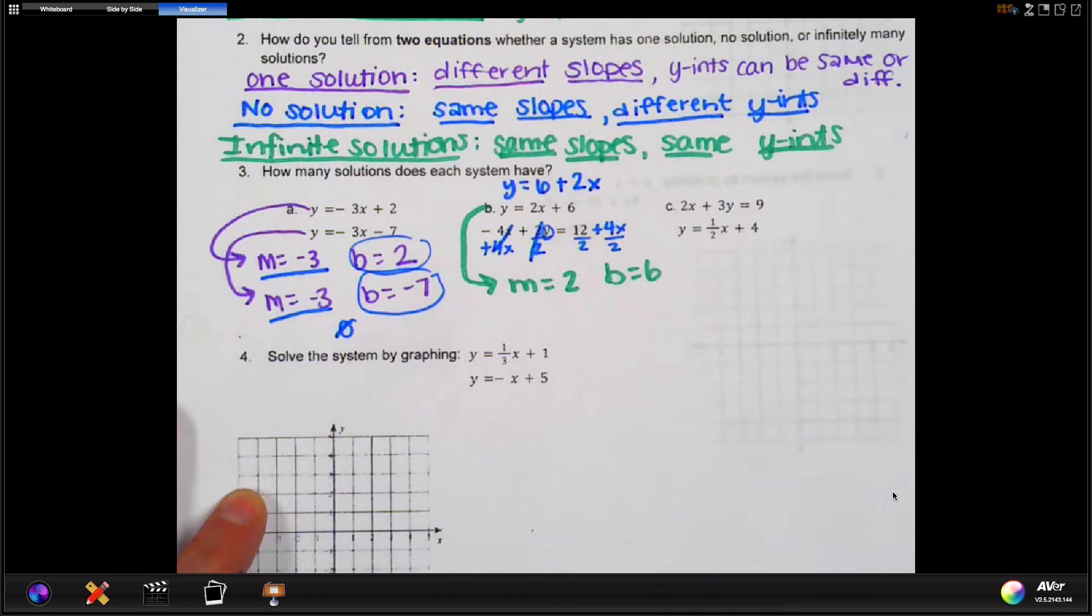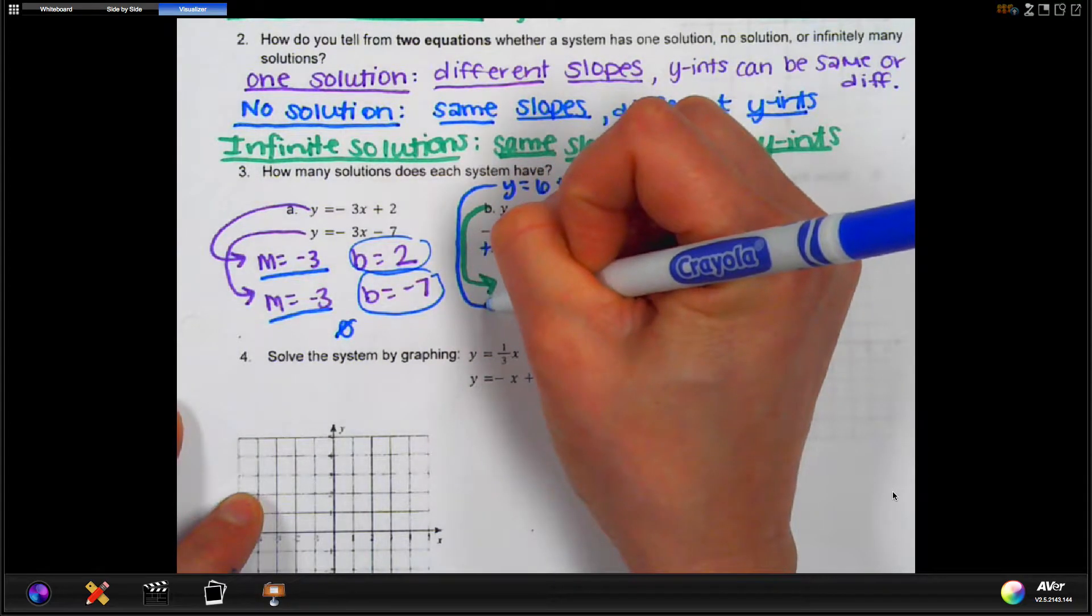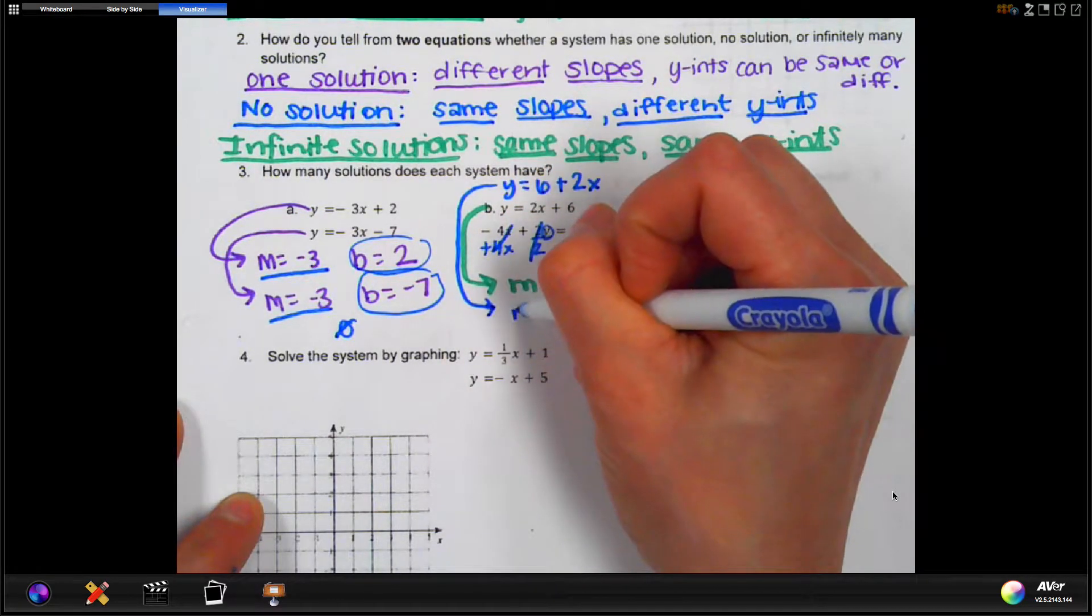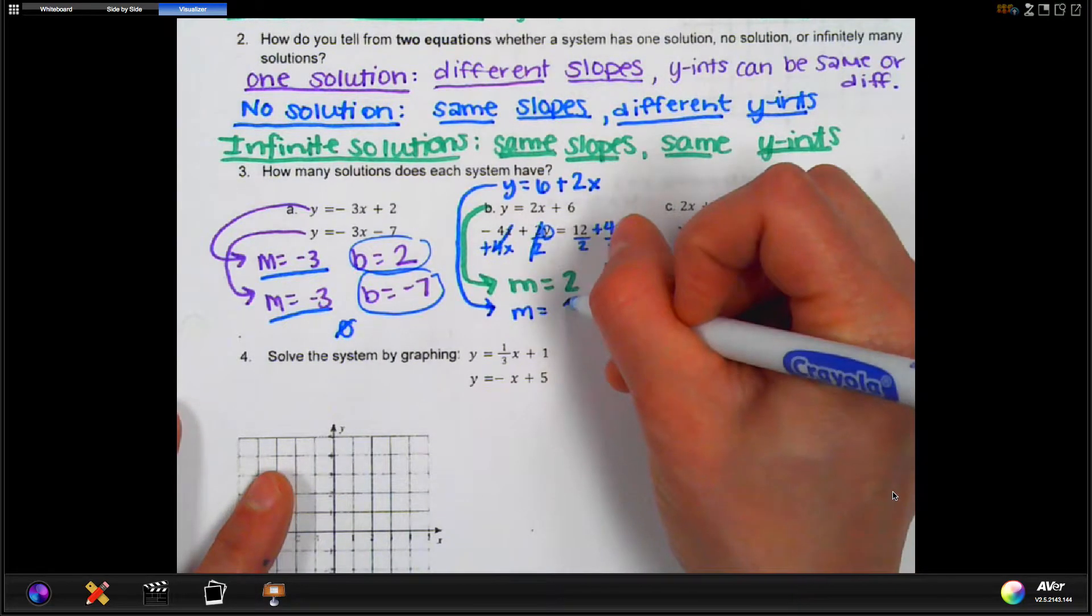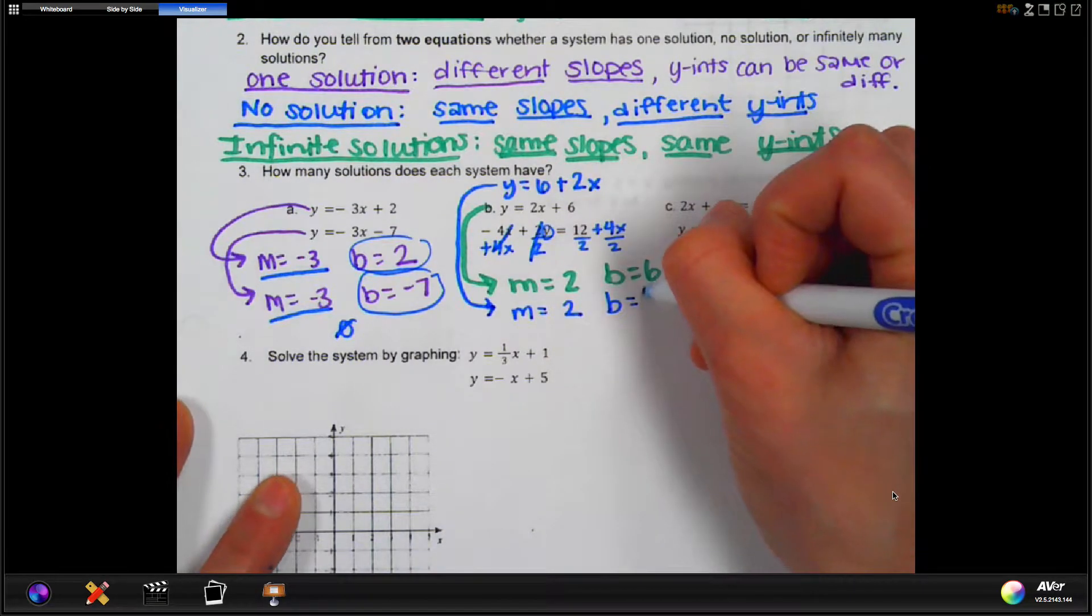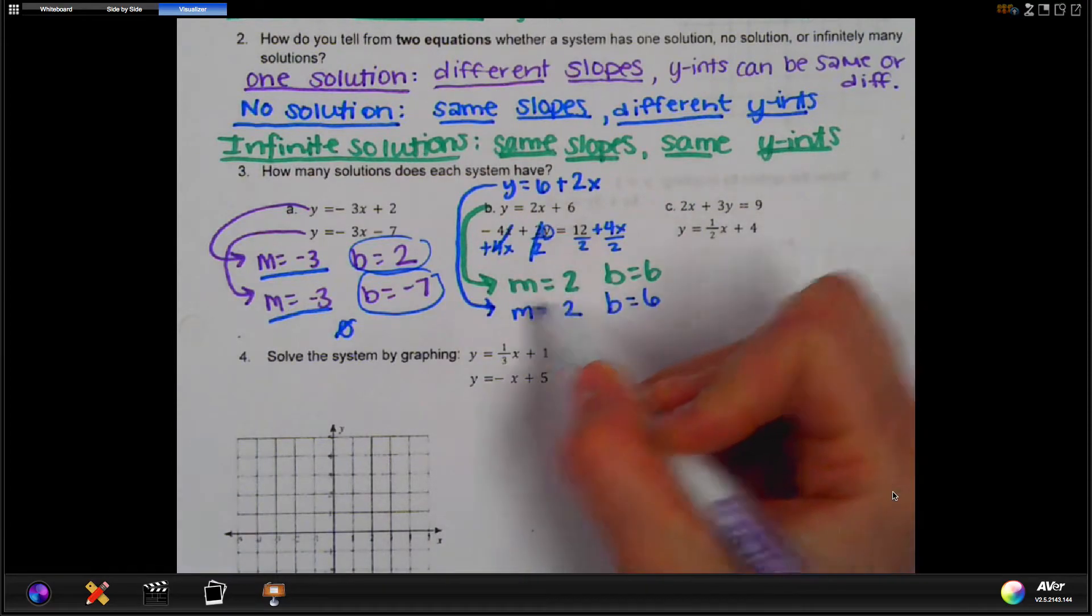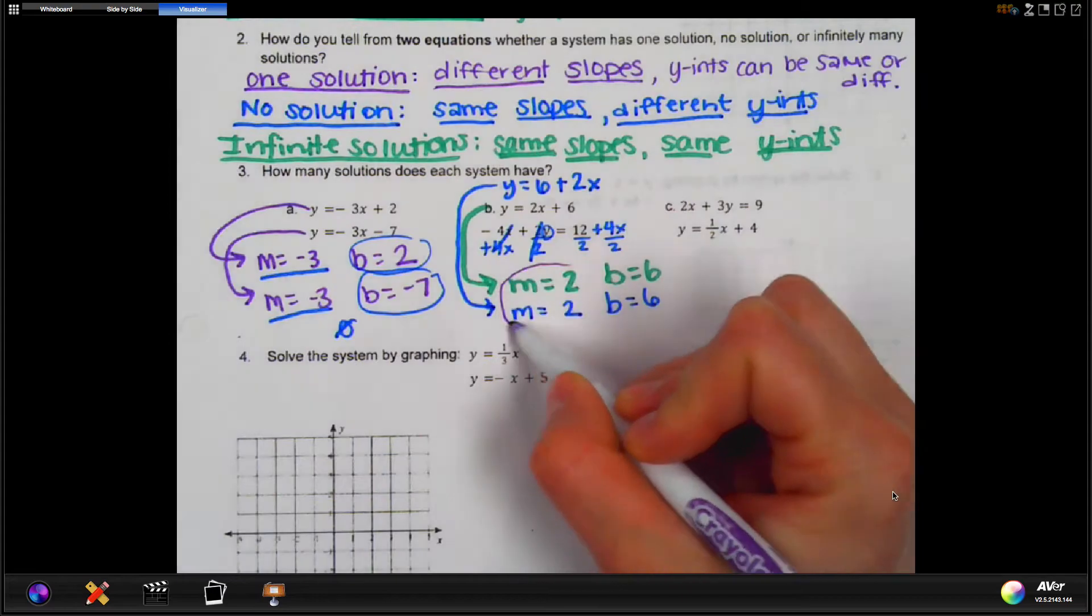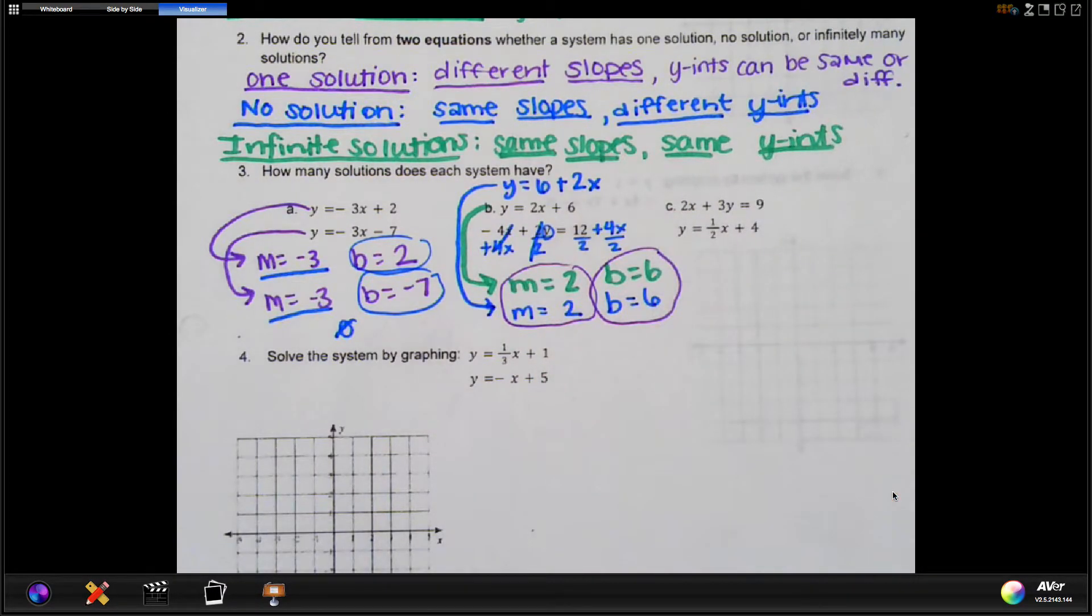Now it's in y equals format, and I can go ahead and identify m and b. So m, the number next to the x, is 2, and b, the number that is alone, is 6. And so we can see now that it's right underneath each other that we ended up with the same slope here and the same y-intercept.